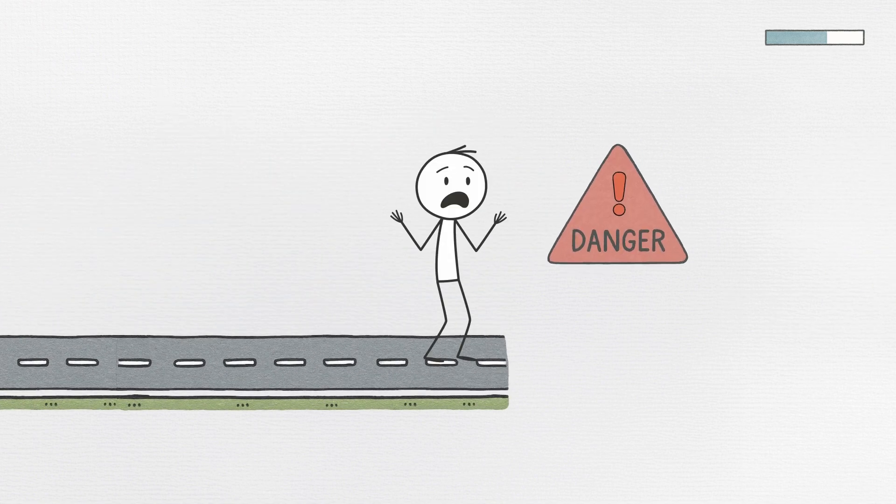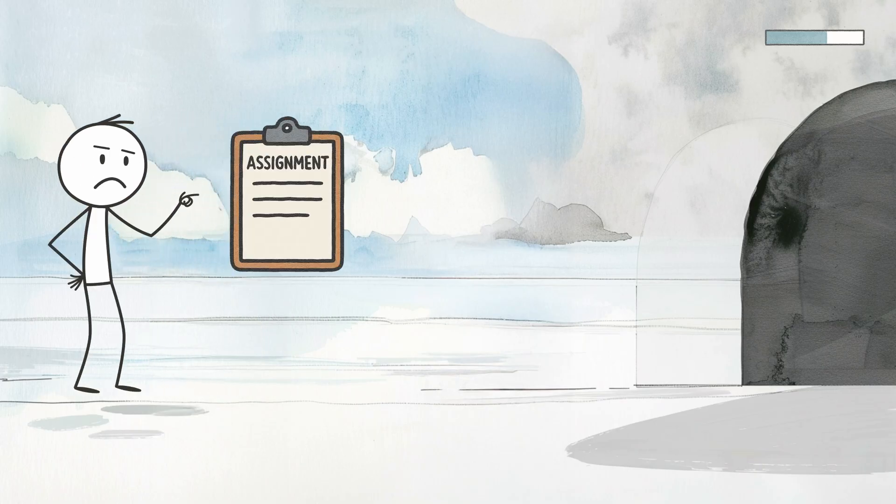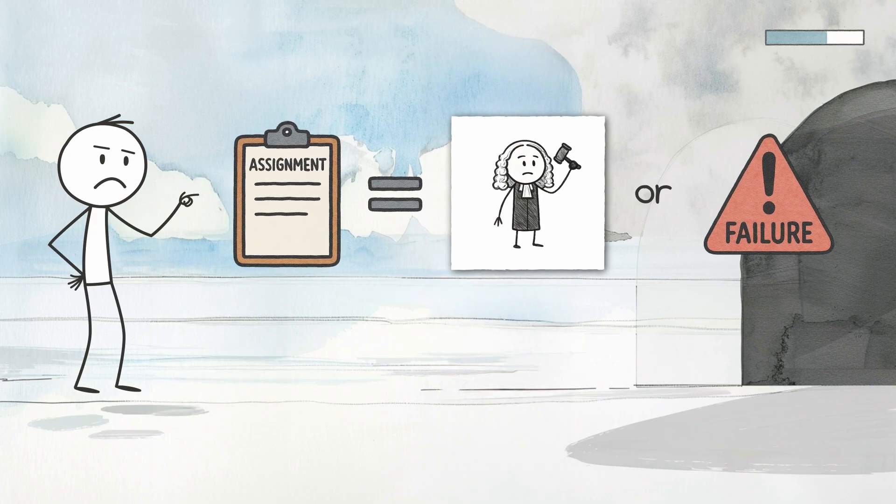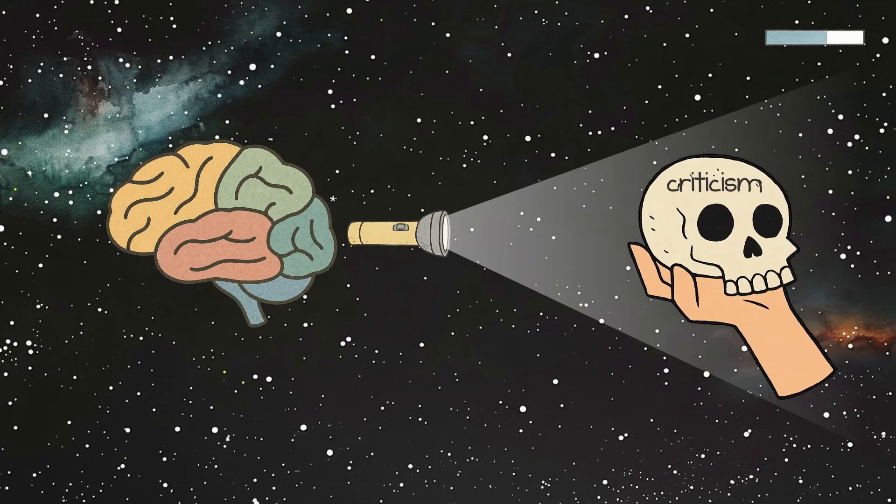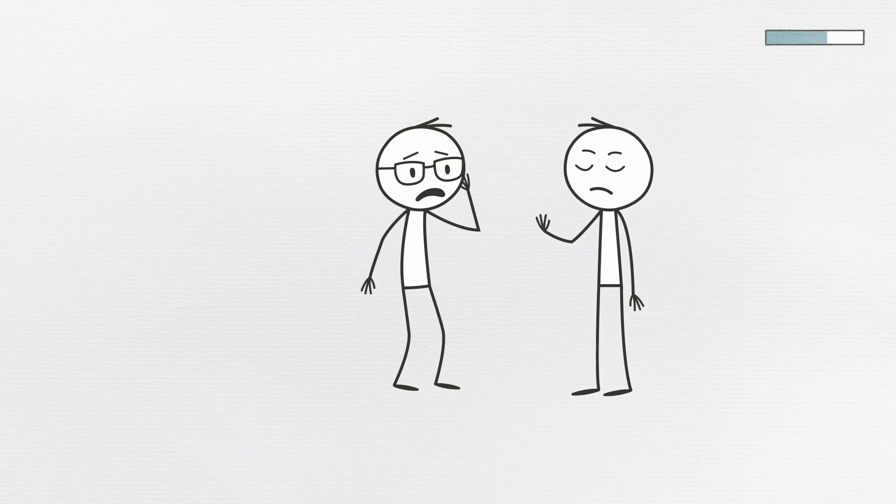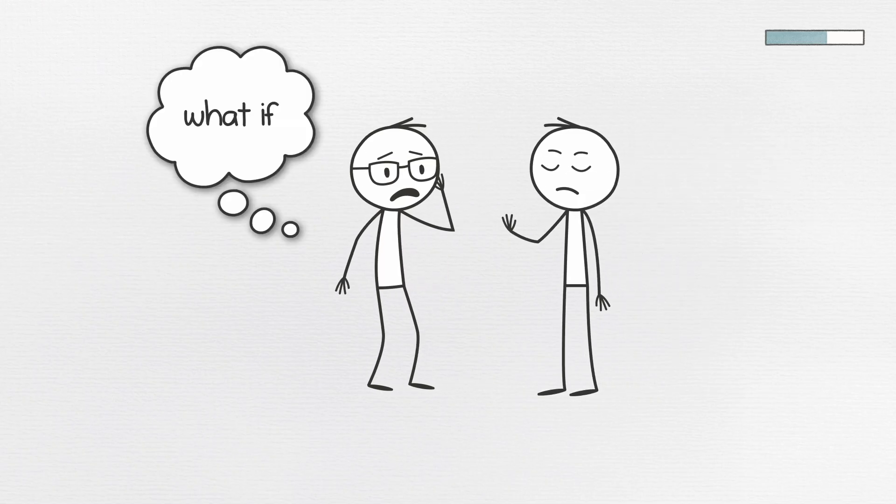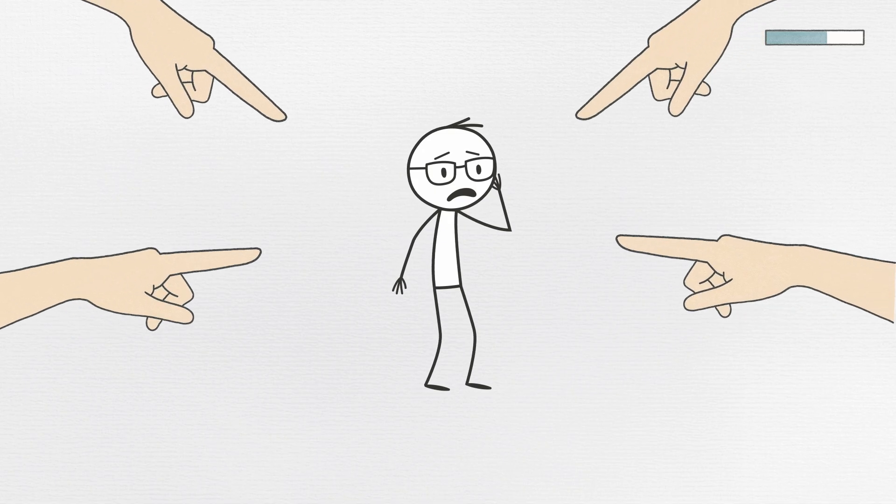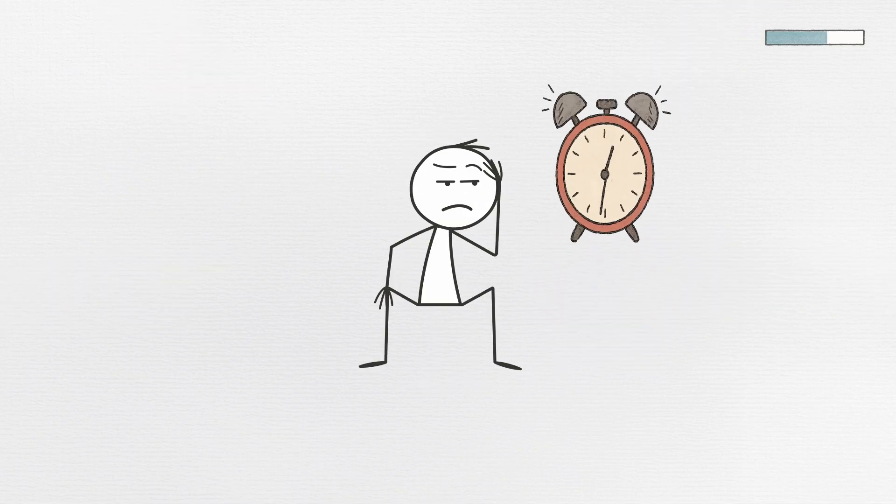Procrastination is your brain's way of keeping you safe from imagined danger. This response is especially strong when the task involves potential judgment or failure. Your brain treats the possibility of criticism like a physical threat. It would rather keep you safe in the land of what if, than risk the pain of actual feedback. Delay can become a form of emotional armor.